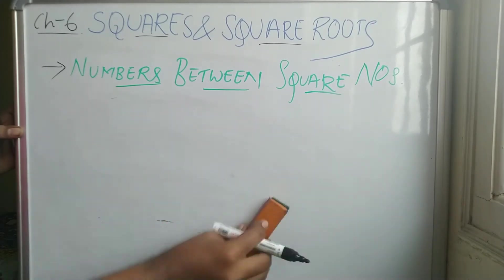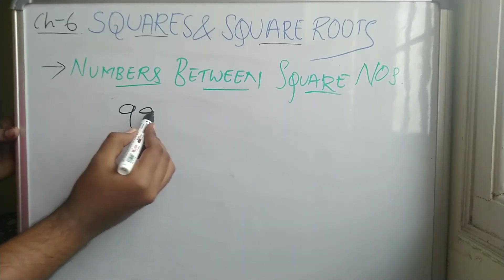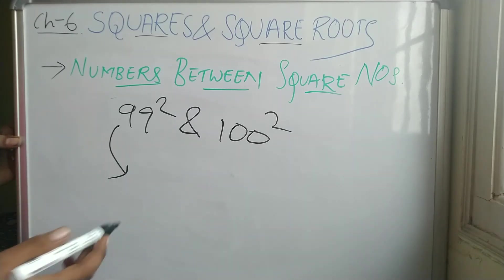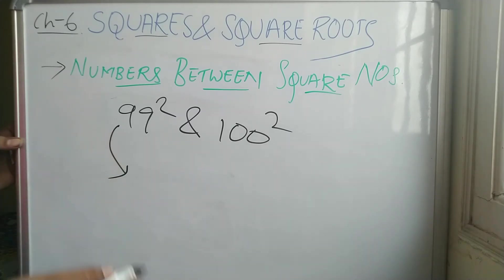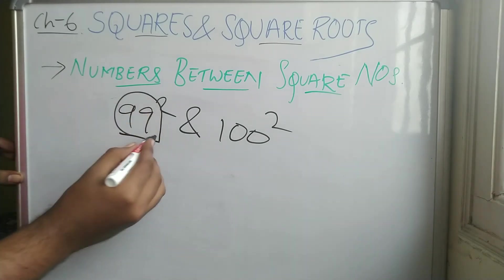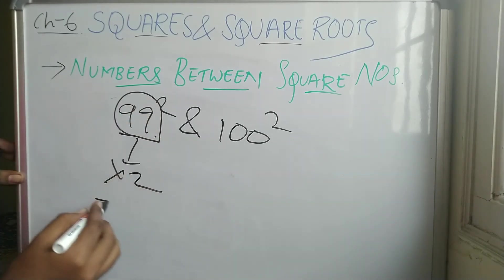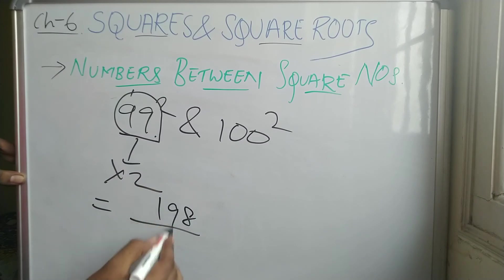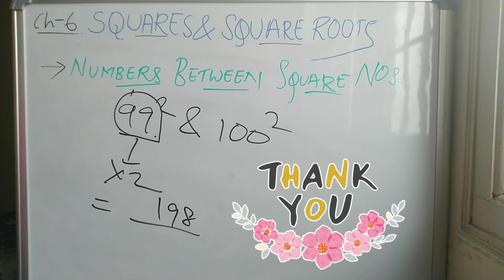Suppose you are given 99 squared and 100 squared and need to find the numbers between them. Using the usual method would be a lengthy process. Instead, the smaller number is 99 — so 99 times 2 equals 198. There are 198 numbers between 99 squared and 100 squared. Simple as that!